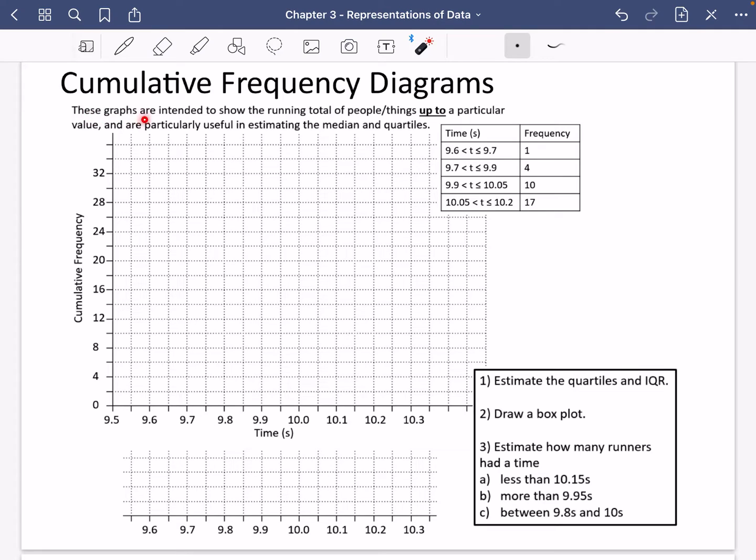These types of graphs are intended to show the running total, which is the cumulative frequency. So they show you the running total of people or things up to a particular value, and they're particularly useful in estimating the median and quartiles.